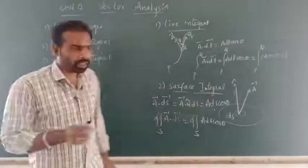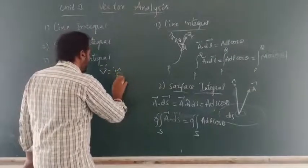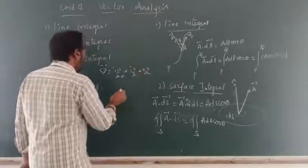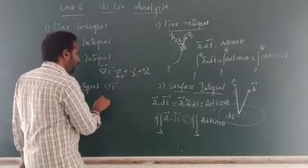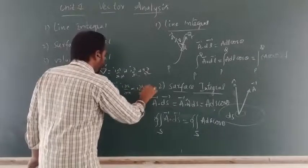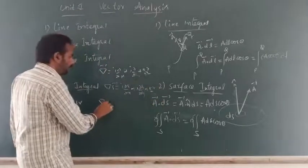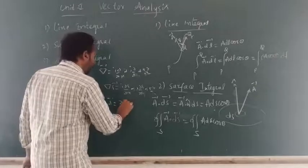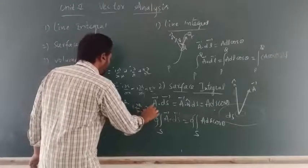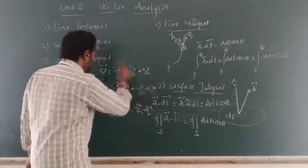Del operator — del bar — is nothing but: i ∂/∂x plus j ∂/∂y plus k ∂/∂z. The gradient of a scalar field using del bar is i ∂φ/∂x plus j ∂φ/∂y plus k ∂φ/∂z. Already in the last class we discussed these things.